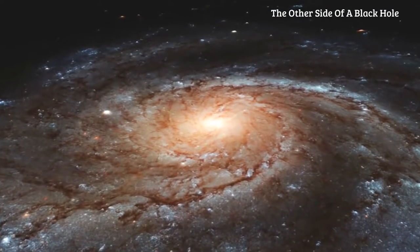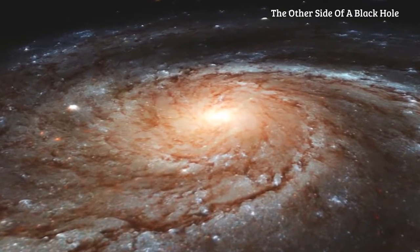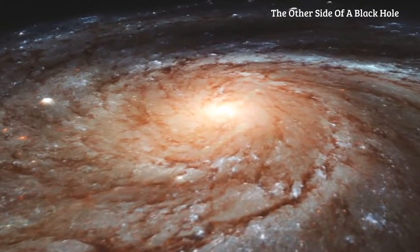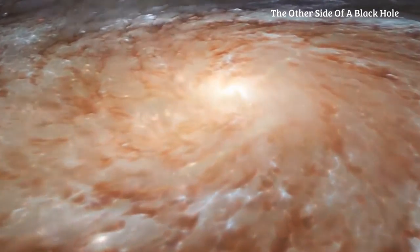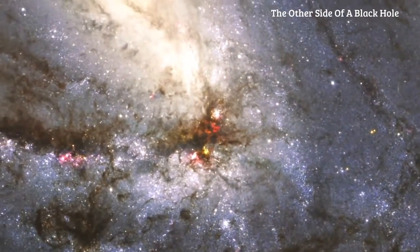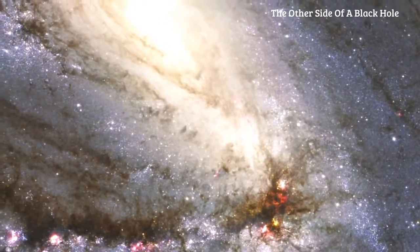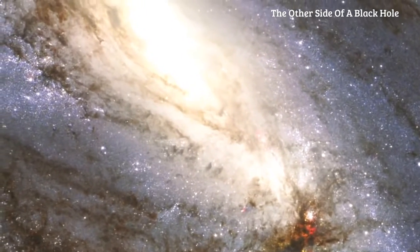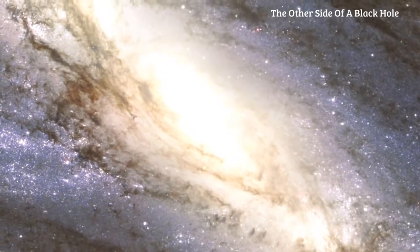To observers in distant space, our Milky Way galaxy would look something like this: a flat spiral with vast arcs of gas, dust, and about 200 billion stars swirling around it. The center, bulging up and out of the galactic disk, is tightly packed with stars.